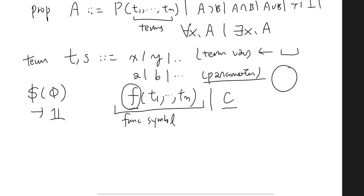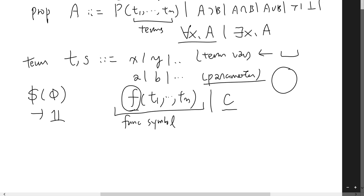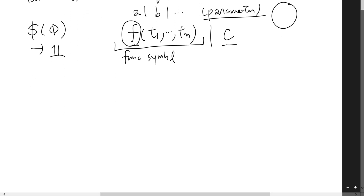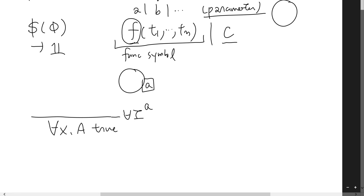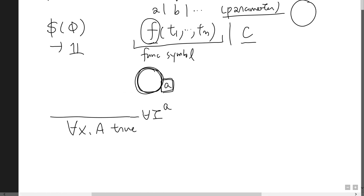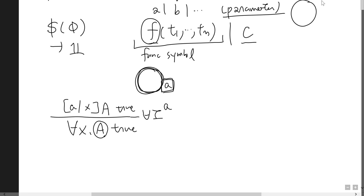Now let's review the inference rules for universal and existential quantification. For the universal introduction rule — to introduce 'for all x' — you assume some random term you know nothing about, giving it a fresh parameter name a. You try to prove A holds for this random term a, and then you can conclude that A is true for every term x.